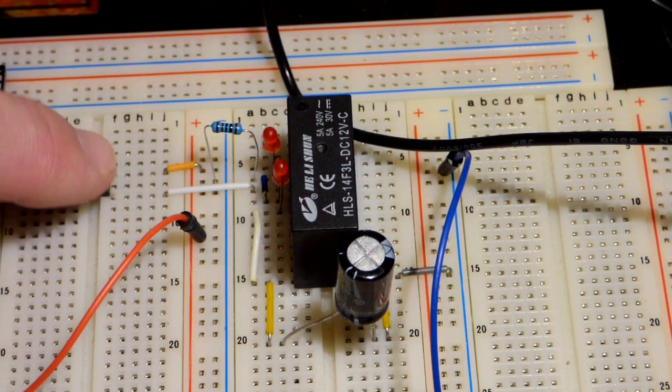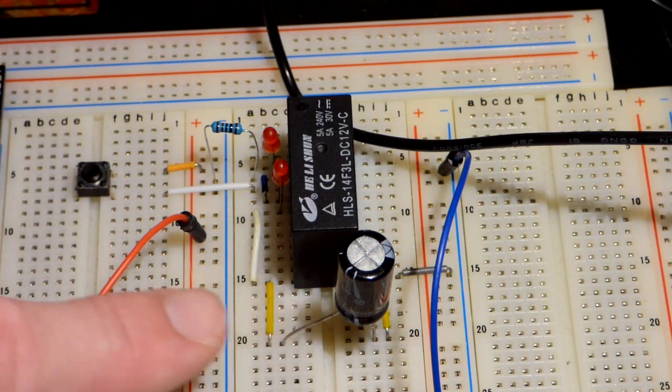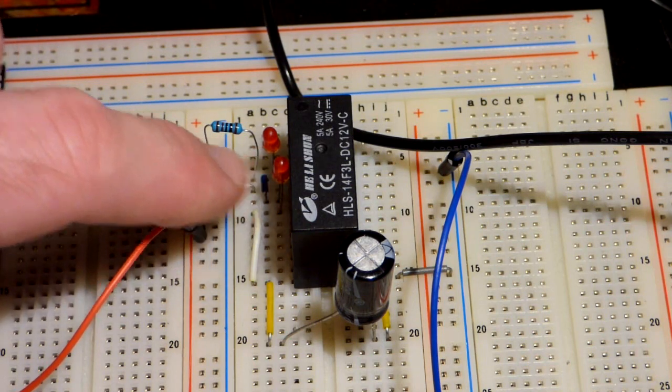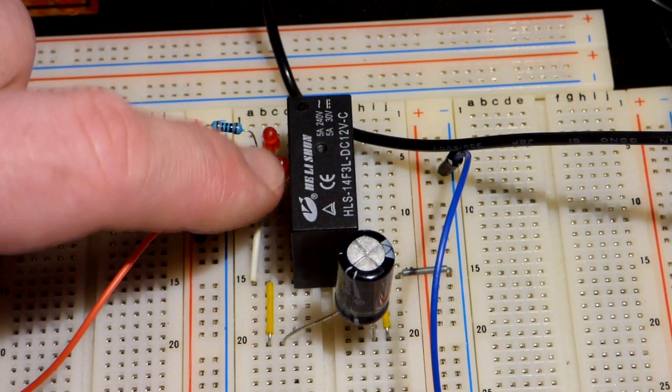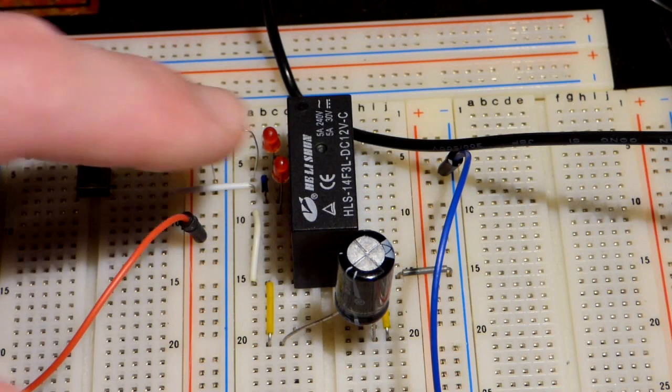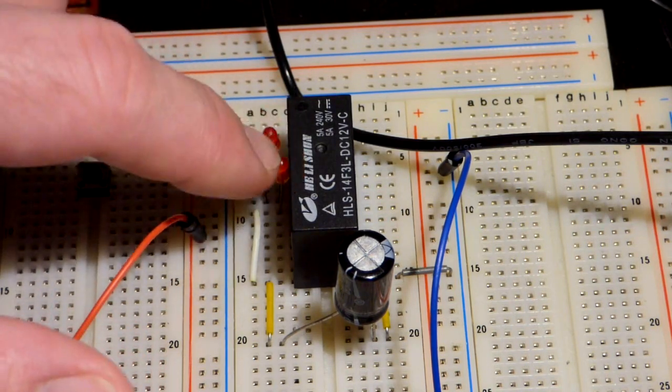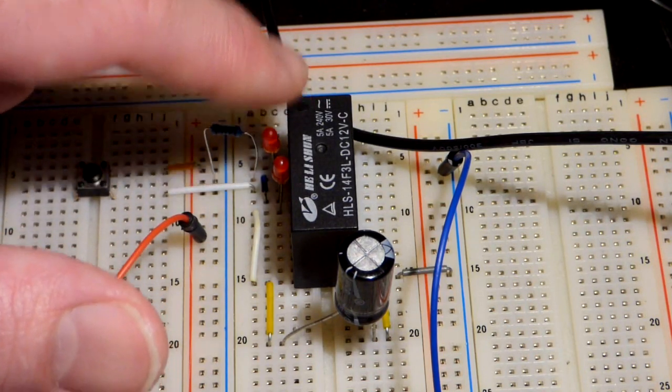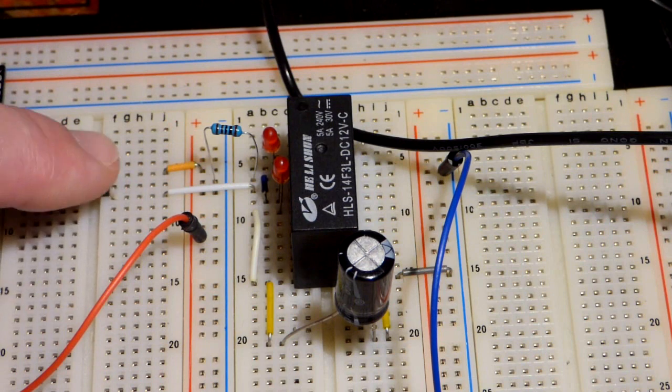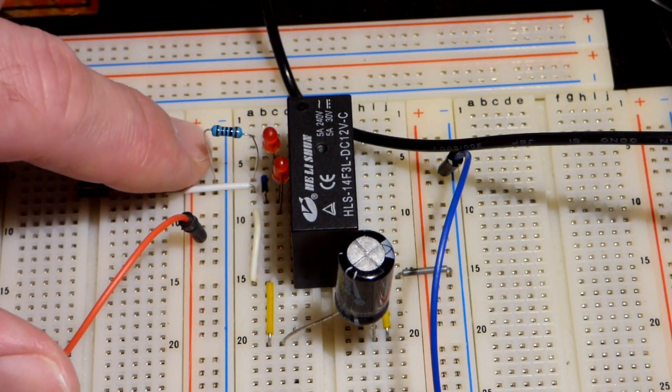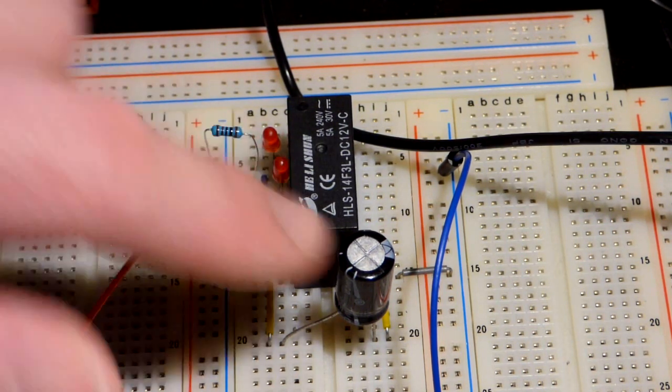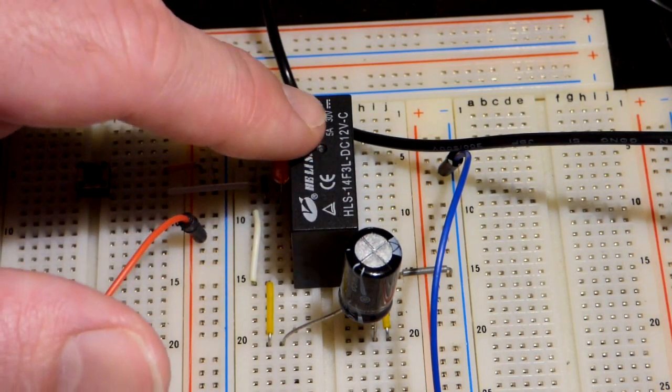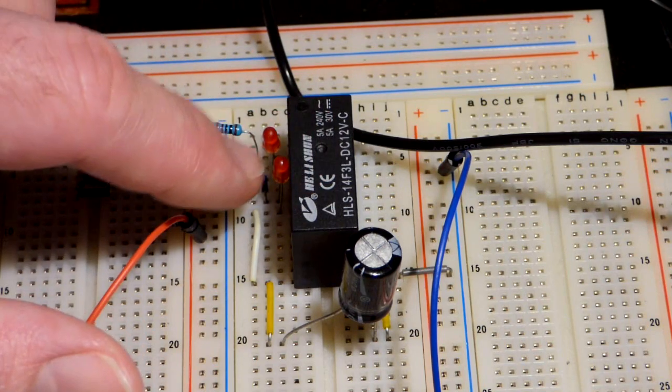But here you can see that what's going on is that when I press the switch, that LED comes on right away. That's because this LED is in the on position to begin with. One LED is switched on, while the other one is switched off. This is normally closed. That one is normally open. When I press this, you can see this is where the positive power supply comes for this whole circuit.